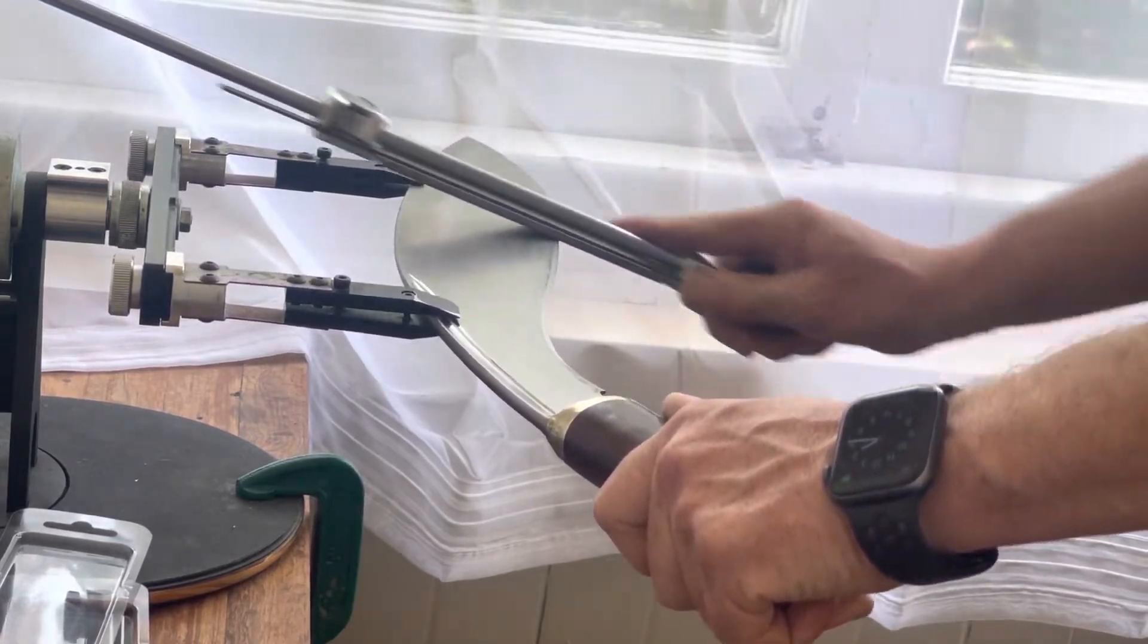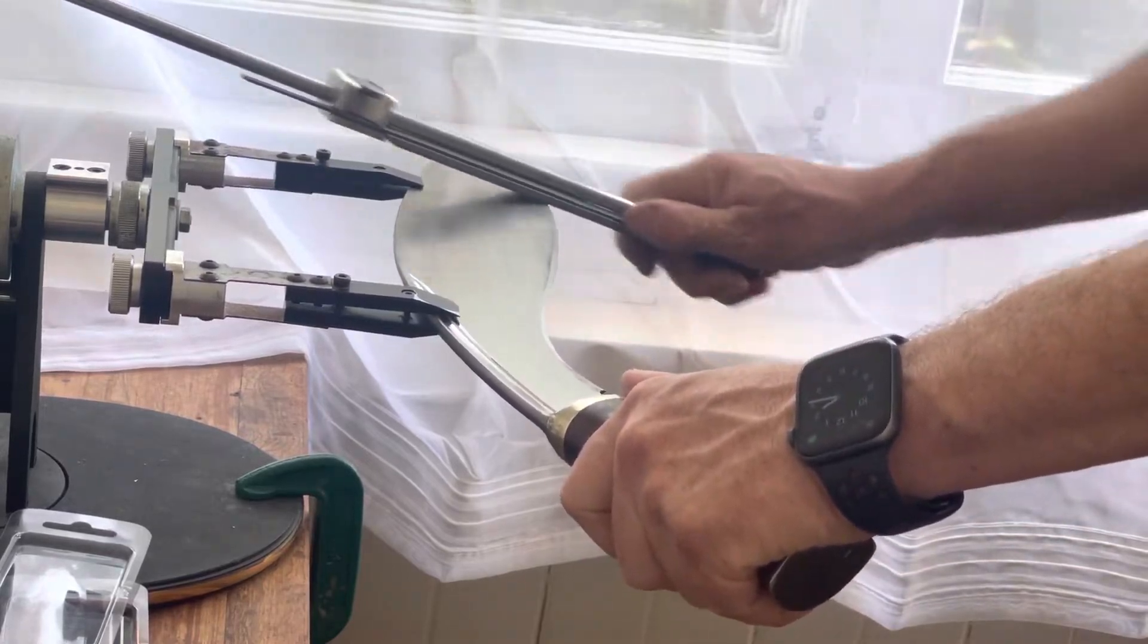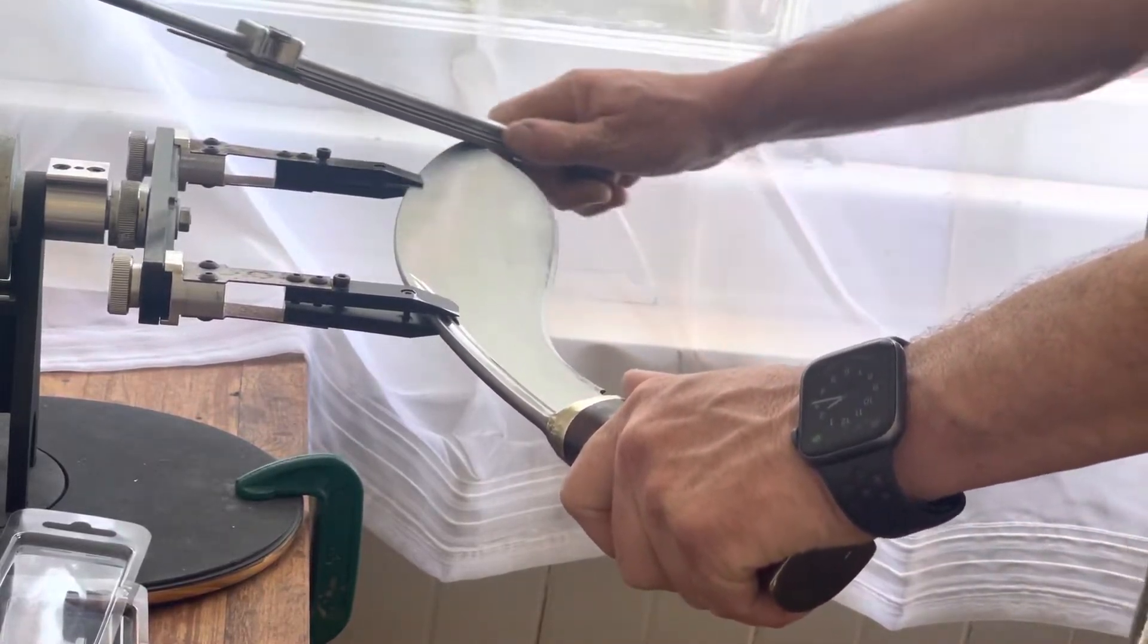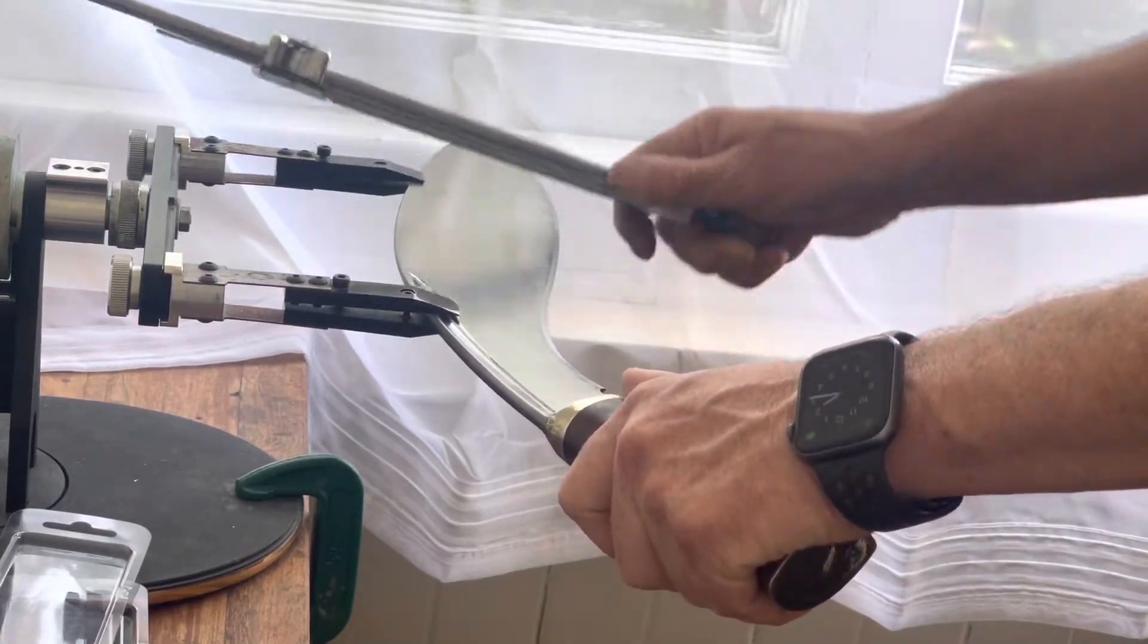The first two sharpenings on 140, either side, are the worst because you're essentially resetting whatever angle the maker had set or whatever angle the customer had on the blade.